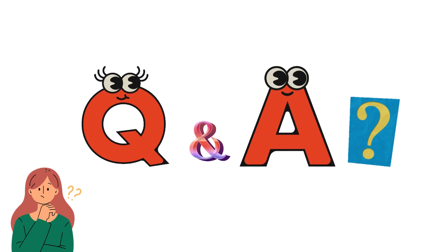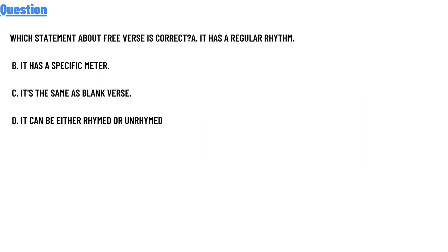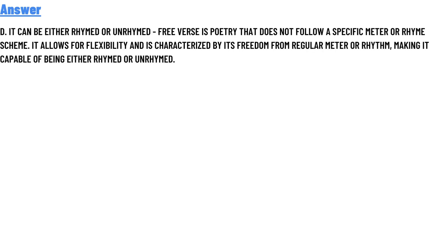Our today's question: which statements about free verse is correct? Option A: it has a regular rhyme scheme. Option B: it has a specific meter. Option C: it has the same rhyme scheme. Option D: it can be either rhymed or unrhymed. The correct answer is option D: it can be either rhymed or unrhymed.